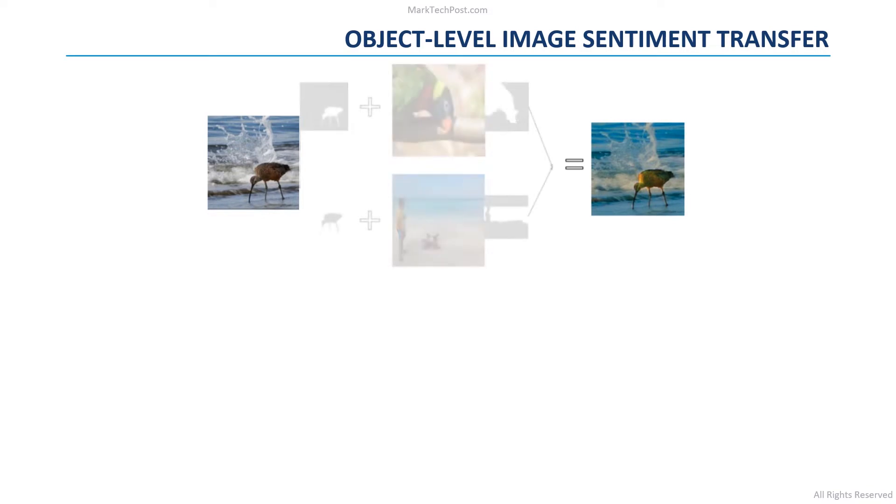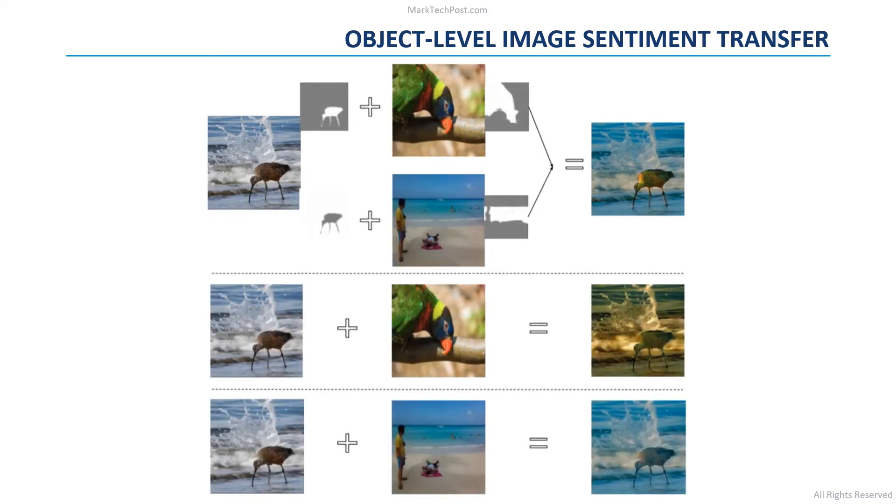One of the main challenges of image sentiment transfer is that different kinds of objects may require different ways to transfer their sentiments. In this figure, to obtain a positive image from the input image, the water should become blue and clear while the bird should become colorful. These two operations should be based on different reference images. Otherwise, you can see how the modified images become quite unrealistic if we decide to use a single reference image to transform both the water and the bird.